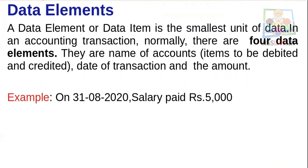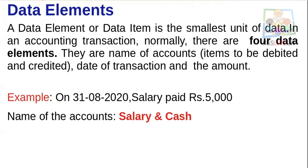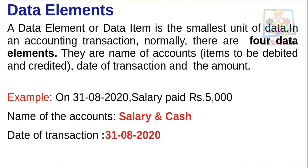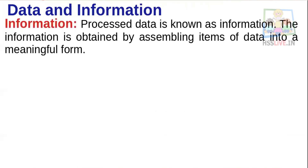In an accounting transaction, normally there are four data elements. For example, the transaction '31st January 2020, salary paid rupees 5,000': the data elements are — name of the account (salary and cash), date of the transaction (31st January 2020), debit/credit nature, and the amount (rupees 5,000). These four are the data elements of that transaction.